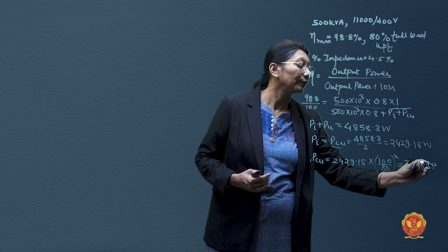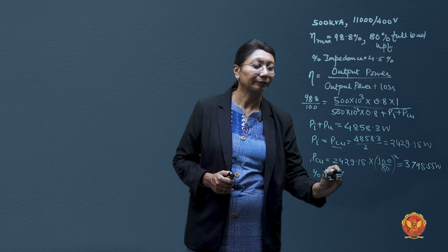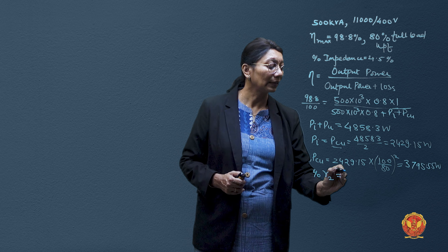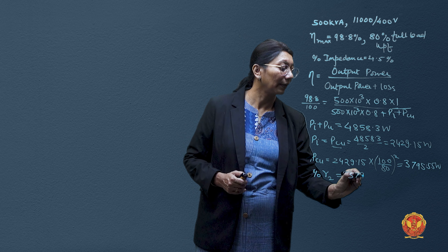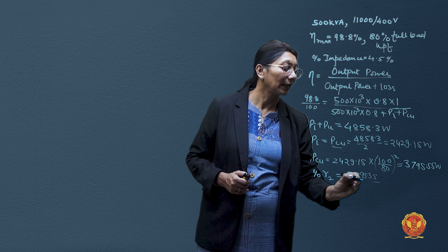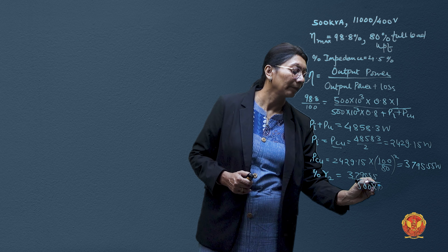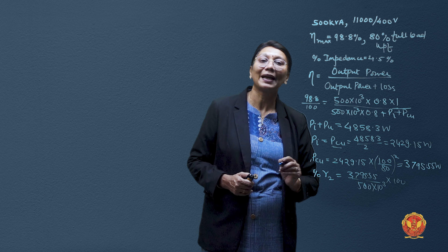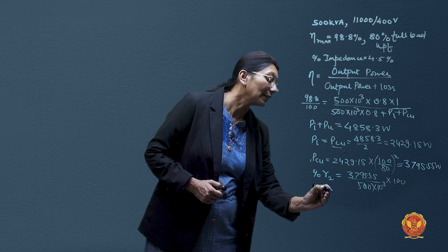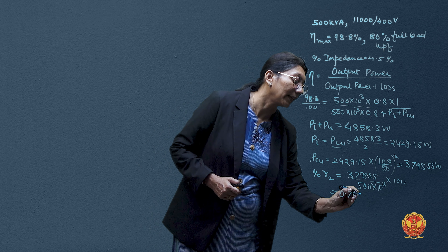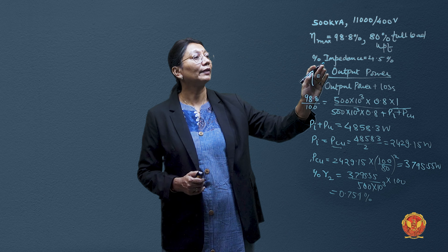From the copper loss, we can find the per-unit and percentage resistance values. The base is 500 kVA. So percentage resistance R% = (3795.55 / (500 × 10³)) × 100 = 0.759%. We also have the percentage impedance of 4.5% from the given data.